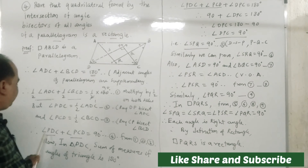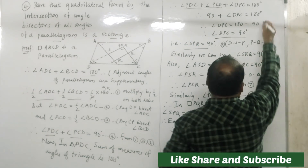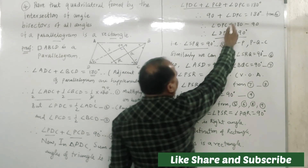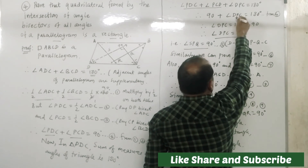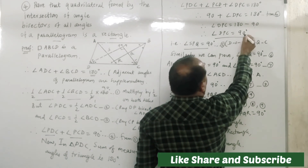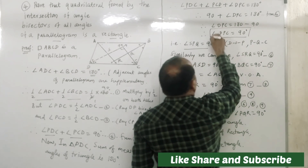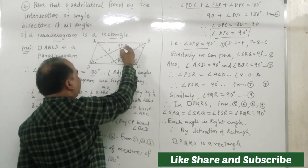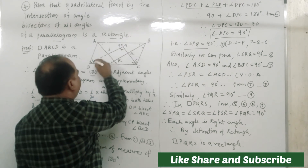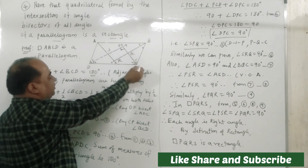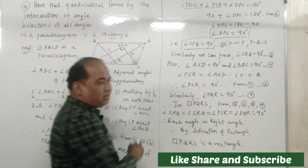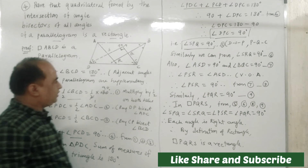From statement four, we get angle PDC plus angle PCD equals 90 degrees. Therefore 90 plus angle DPC equals 180 degrees, so angle DPC equals 180 minus 90, therefore angle DPC equals 90 degrees. Since angle DPC equals 90 degrees and there is a vertical angle relationship, angle SPQ is also equal to 90 degrees. So we have proved that one angle of quadrilateral PQRS is 90 degrees.